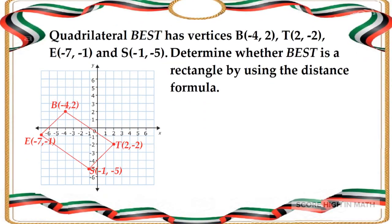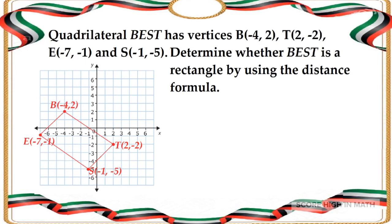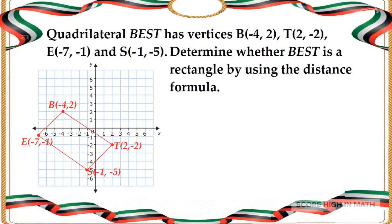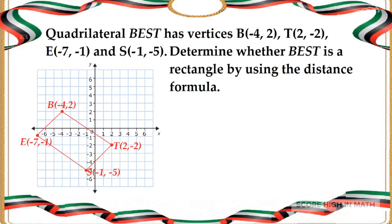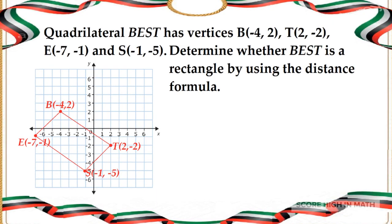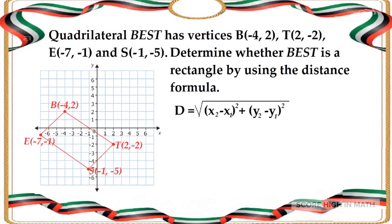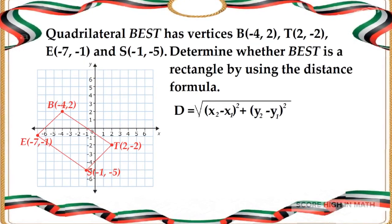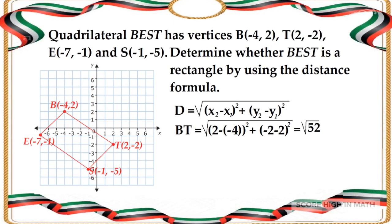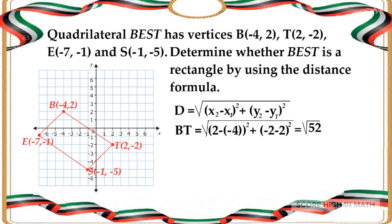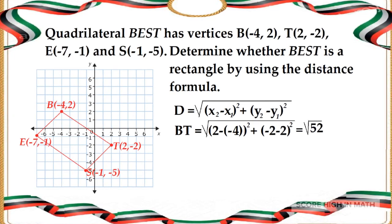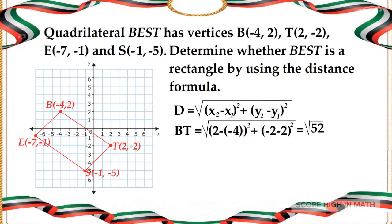Let us try to identify if a diagram on the Cartesian plane is a rectangle. Quadrilateral BEST has vertices: B is (−4, 2), T is (2, −2), E is (−7, −1), and S is (−1, −5). We will determine whether BEST is a rectangle using the distance formula: the square root of (x2 minus x1) squared plus (y2 minus y1) squared. For line segment BT: the square root of (2 minus negative 4) squared plus (negative 2 minus 2) squared gives us the square root of 52. For line segment ES: the square root of (−1 minus −7) squared plus (−5 minus −1) squared also gives us the square root of 52, so the two line segments are congruent.